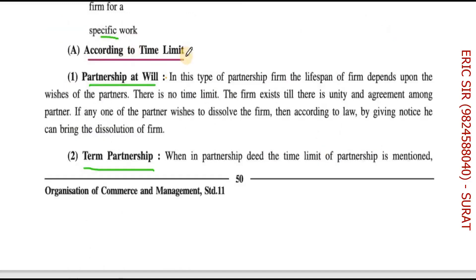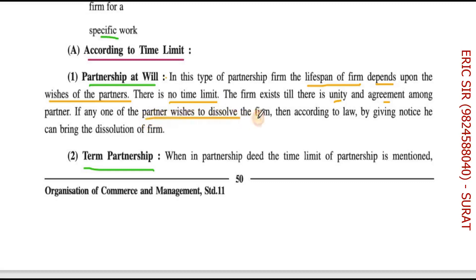According to time limit, the first type is partnership at will. In this type of partnership firm, the lifespan of the firm depends upon the wishes of the partners. There is no fixed time limit — the firm continues as long as the partners agree. But if any one partner wishes to dissolve the firm, by giving notice he can bring about the dissolution of the firm.